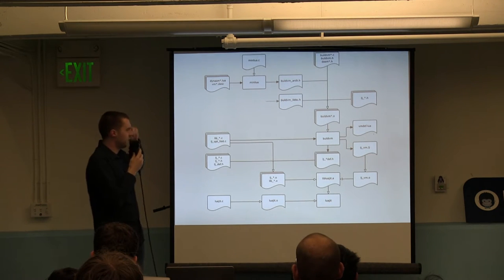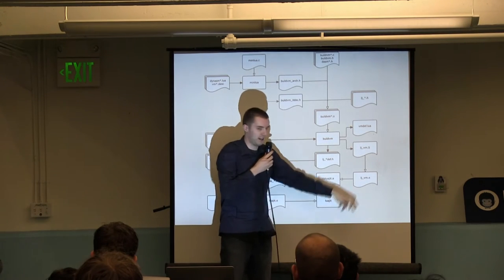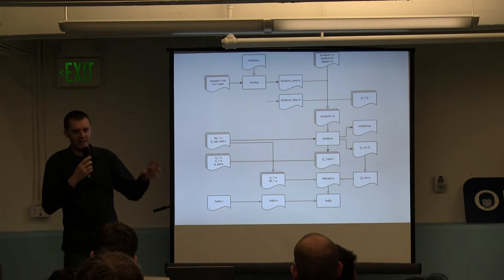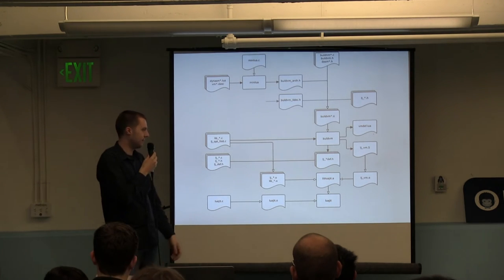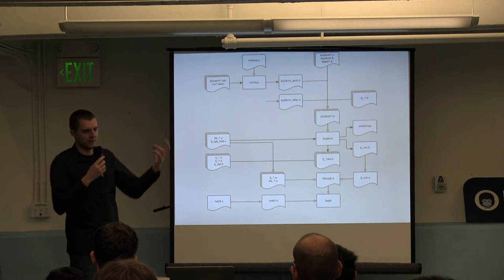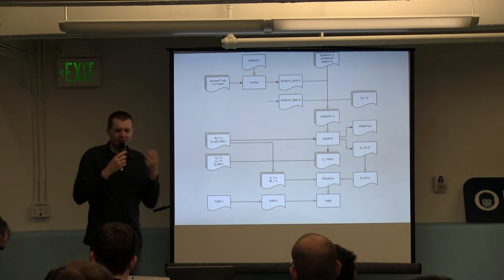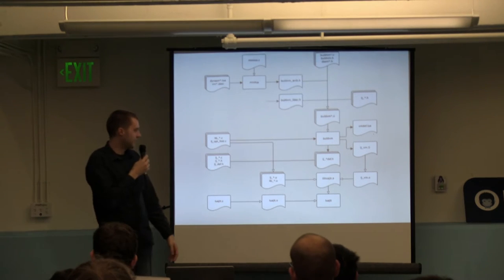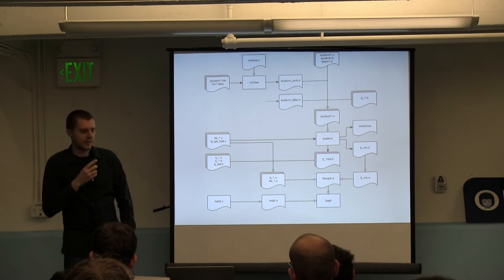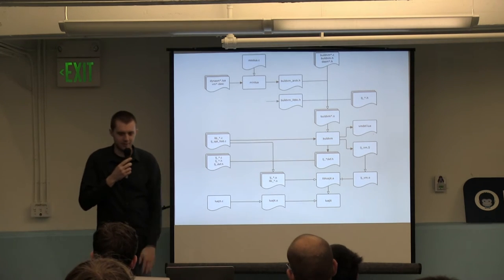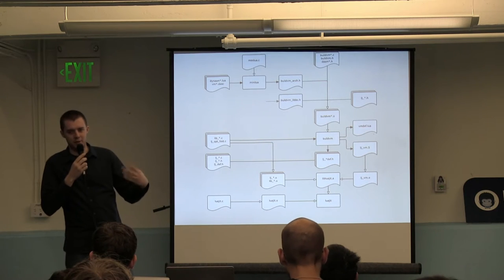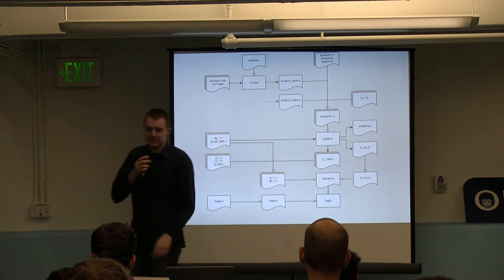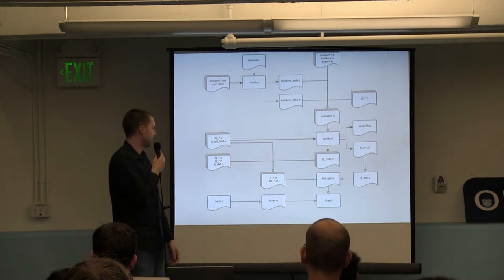Why not directly write an object file? Because object files are really hard — complicated binary stuff, a bajillion formats. Rather than creating one directly, it's easier to write some assembly code and let the system turn that into an object file. Except on Windows, which doesn't come with proper tooling. So on Windows, this guy directly emits an object file, because that's less painful than getting an assembler working on Windows. Yay, Windows!